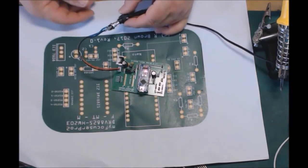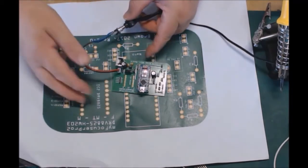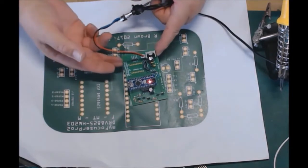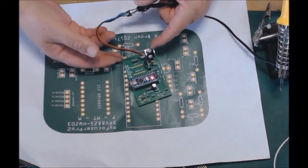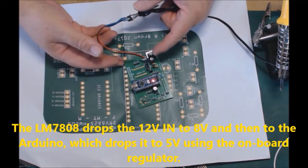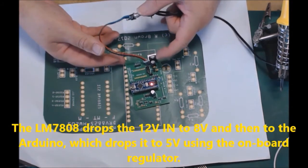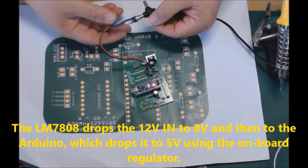So if I connect this up, I would expect the Arduino to light up. So there we go. The red light on the Arduino is actually lit up, as you can see, so there's power to the board. That tests to make sure that the LM7808 regulator is actually providing 5 volts to the board, which it is.